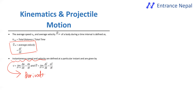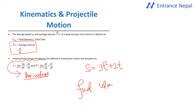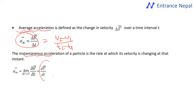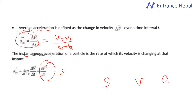The instantaneous velocity is the derivative of the displacement equation with respect to time. Suppose the displacement equation is s equals 3t² plus 2t. You find the instantaneous velocity at t equals two seconds, and also the average velocity in the interval of two seconds. Similarly, instantaneous acceleration is the derivative of velocity with respect to time.